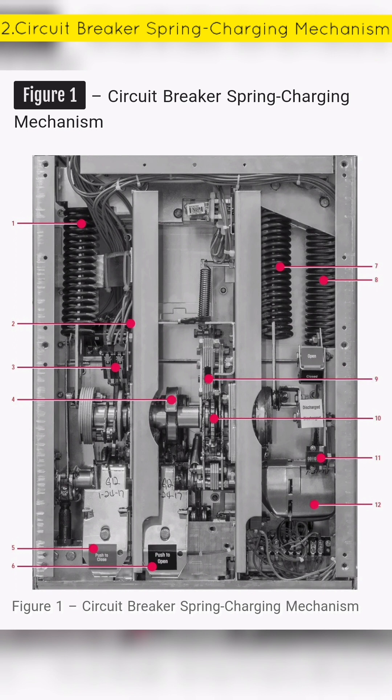The labeled components are: 1. Closing spring. 2. Latch check switch to rear of motor cutoff switch. 3. Motor cutoff switch. 4. Closing cam. 5. Spring release assembly. 6. Shunt trip assembly. 7. Closing spring. 8. Reset opening spring. 9. Manual charge socket. 10. Ratchet wheel. 11. Operations counter. 12. Charging motor.